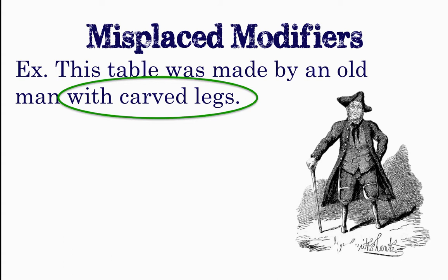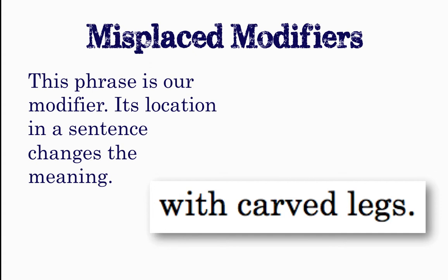This table was made by an old man with carved legs. When phrased this way, it makes it seem like the man has the carved legs and not the table. This phrase, 'with carved legs,' is our modifier here. We need to relocate it so it's in a more logical spot.